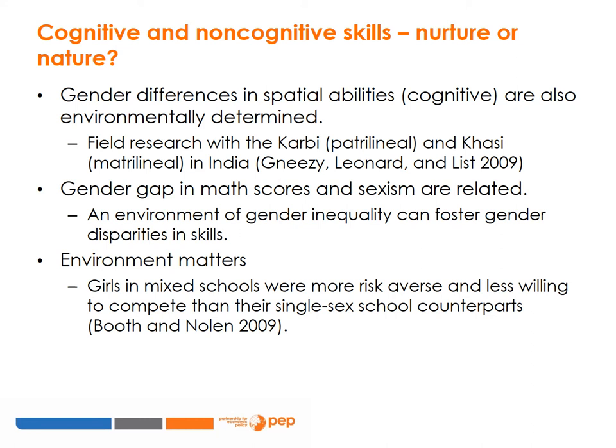Studies that analyse cross-country variation in the gender gap in maths scores find that when controlling for sexism, using measures such as the World Economic Forum's Gender Gap Index, the male-favoring gender gap in maths becomes smaller and the female-favoring gap in reading becomes larger, providing support for the theory that an environment of gender inequality can foster gender disparities in skills. Evidence from single-sex versus mixed schools in England shows that girls in mixed schools were more risk-averse and less willing to compete than their single-sex school counterparts. This leads us back to the basic premise that gender is a social construct distinct from the biological difference between sexes.